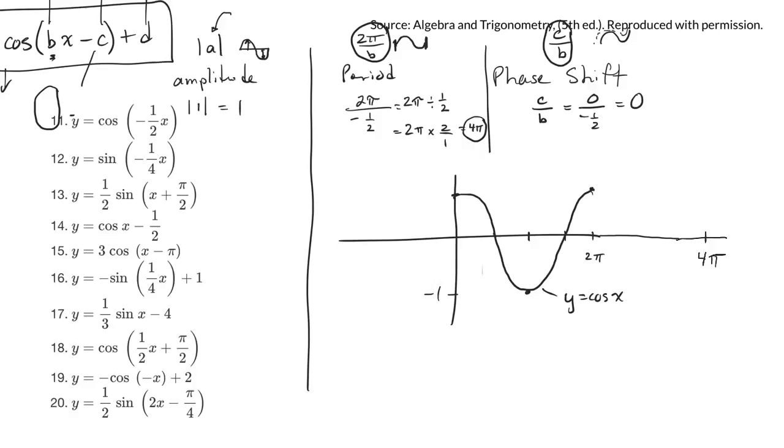But the negative does play a role because that negative in that spot tells me that the graph reflects on the y-axis. So instead of starting and going that way, you can think of it as starting there and going that way.